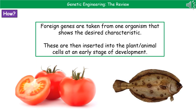When it comes to understanding how we carry out this process of genetic engineering, the first thing we need to do is identify our desired characteristic. What we then do is take those foreign genes from one organism that shows that characteristic, and then we insert them into the plant or animal that we want to show this characteristic at a really early stage of development. A good example of where we've done this is in tomatoes.